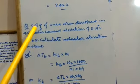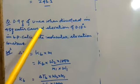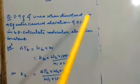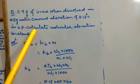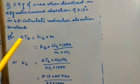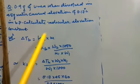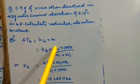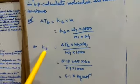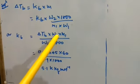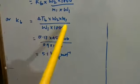Second question is: 0.9 gram of urea when dissolved in 45 gram of water causes elevation of 0.17 degree centigrade in boiling point. Calculate molar elevation constant, that is Kb. As we know that elevation in boiling point ΔTb = Kb × M. M is the molality = Kb × W2 × 1000 / (M1 × W1). Now, Kb will be ΔTb × W2 × M1 / (W1 × 1000).